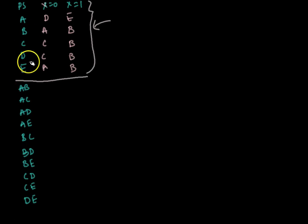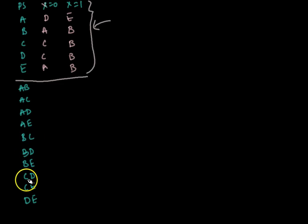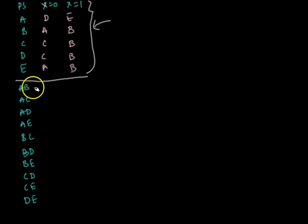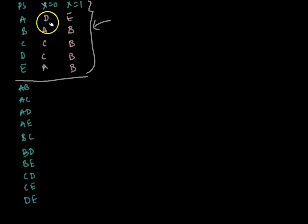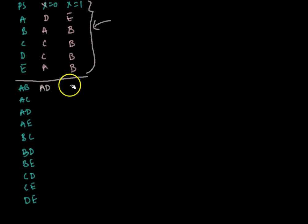If there are five states, then we get pairs: A-B, A-C, A-D, A-E, B-C, B-D, B-E, C-D, C-E, and D-E. We are pairing each state with every other. On the right-hand side, we find the implied pairs. For A-B, the implied pairs are A-D and B-E.